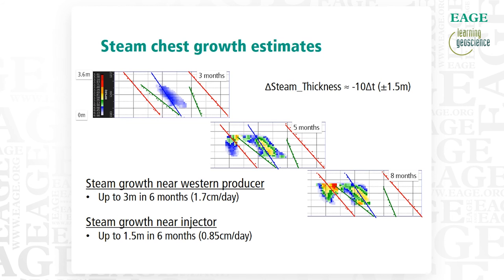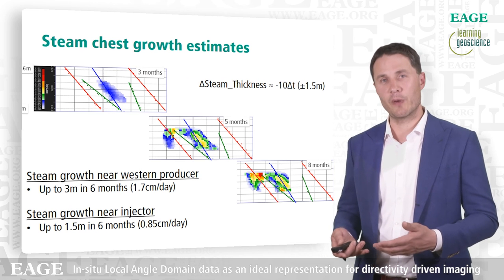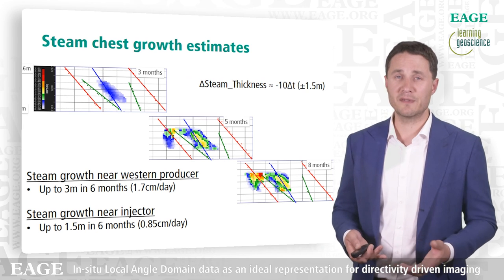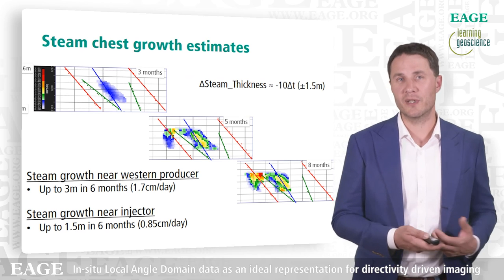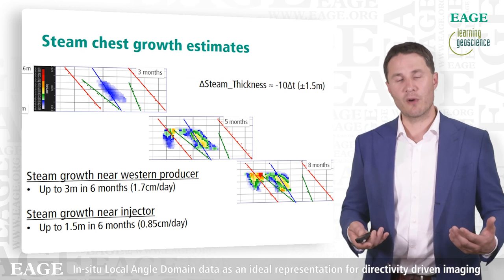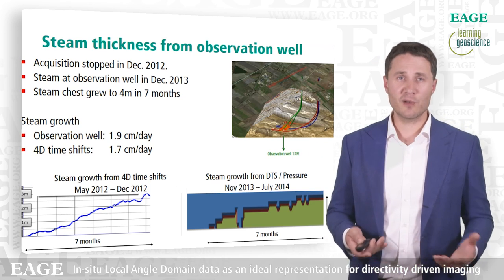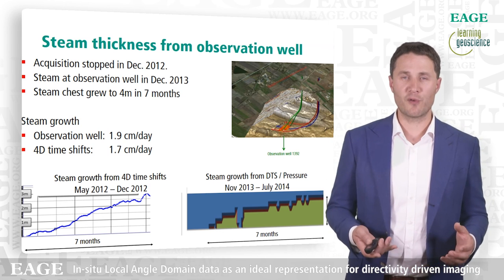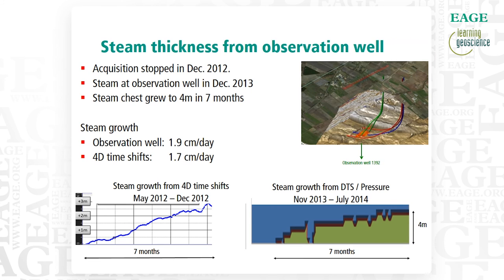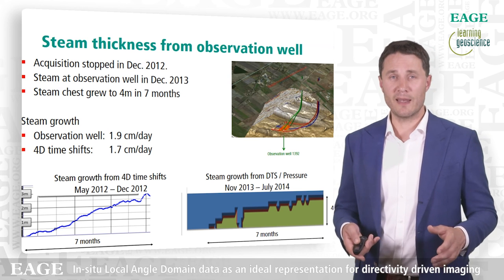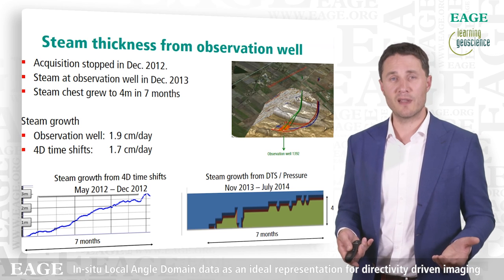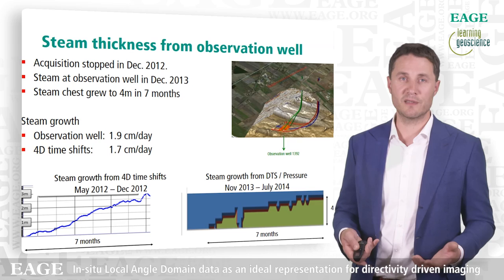For three different time steps, you see the timeshifts converted to steam thickness. The steam thickness growth is not uniform — there are areas where it's larger and areas where it's smaller. Especially in areas where steam already exists, growth is smaller, about 0.85 centimeters per day. In areas with no prior steam, we see fast growth — a steam growth curve that's rapid in the beginning and then levels off. This is confirmed by well data: observations from an observation well drilled between the injector and the western production well show that steam — which reached that location a year after we stopped our experiment — grew to roughly four meters over seven months, a rate very comparable to what we derived from our 4D timeshifts.